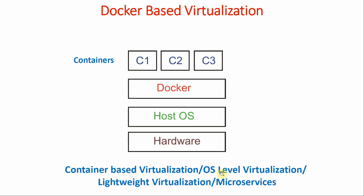Another name is OS-level virtualization because all containers use the kernel of the host operating system. Because it uses very few resources it is called lightweight virtualization. Another name is microservices, because in a VM a programmer might have Python, Java, C, C++, and Ruby all together, but in containers we have one container with only Python, one with only Java, one with only C. That is why we say we are working on a microservices architecture.